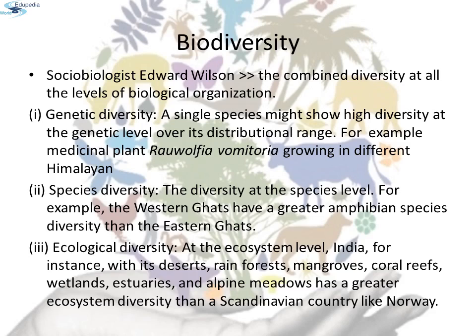The most important levels are: genetic diversity. A single species might show high diversity at the genetic level over its distributional range. The genetic variation shown by the medicinal plant Rauwolfia vomitoria growing in different Himalayan ranges might be in terms of potency and concentration of the active chemical, i.e. reserpine, that the plant produces. India has more than 50,000 genetically different strains of rice and 1,000 varieties of mango — another example of genetic diversity.